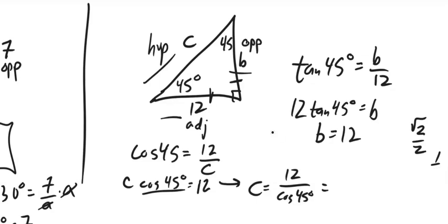Cosine of 45 degrees is √2/2, which is the same as 1/√2. And I'm going to use the 1/√2 form of it just because it's a little easier to divide by. 12 over 1/√2—divided by a fraction, the same as multiplying by the reciprocal. So this should be 12√2.